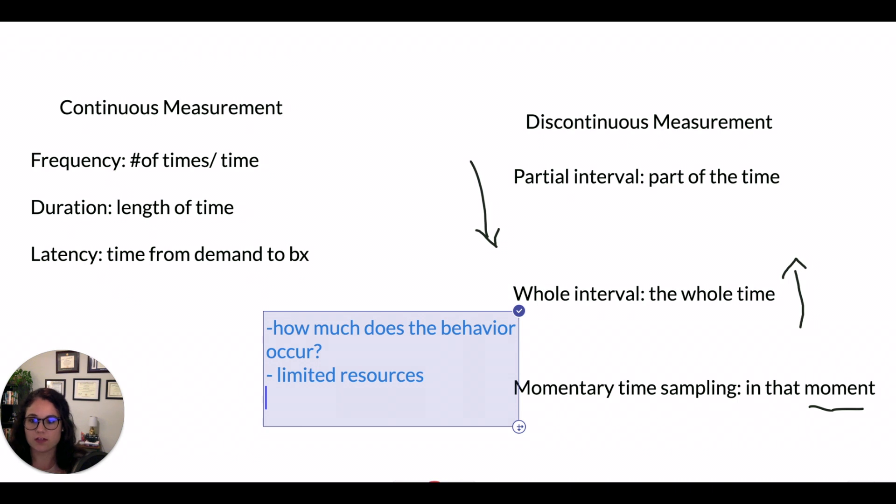Another thing to consider is going to be with the type of behavior. How does it look? Is it discrete? Does it have a clear beginning and end? If it does have a clear beginning and end, most likely you could use a continuous measurement type.